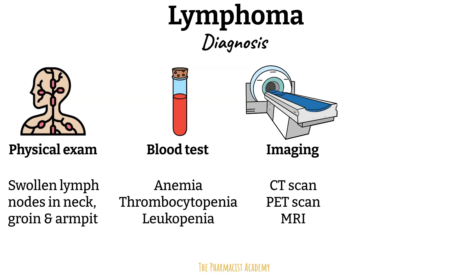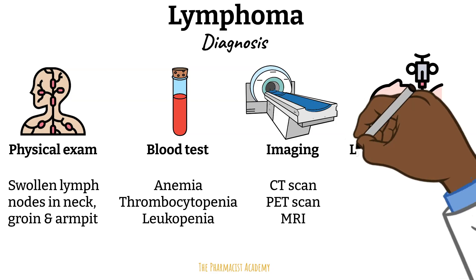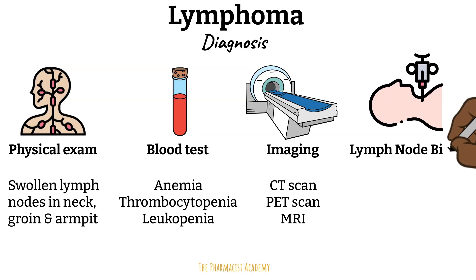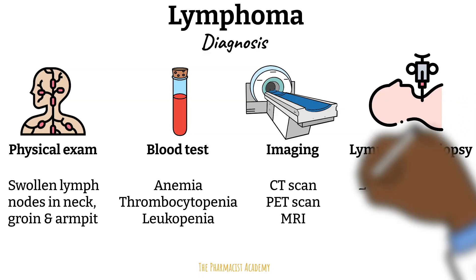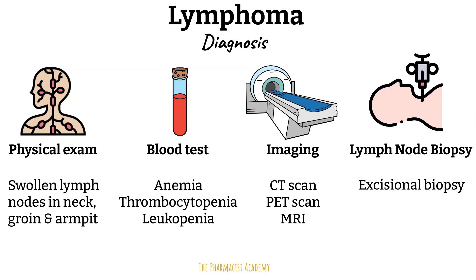PET scans are especially useful for detecting active lymphoma cells. A lymph node biopsy is one of the most crucial tests — an excisional biopsy is the gold standard, where a whole lymph node or a large section is surgically removed and examined under a microscope by a pathologist to confirm lymphoma. Only a biopsy can confirm the diagnosis and determine the exact type of lymphoma.